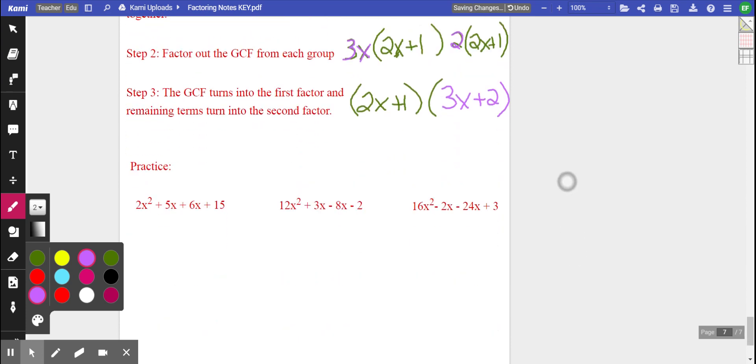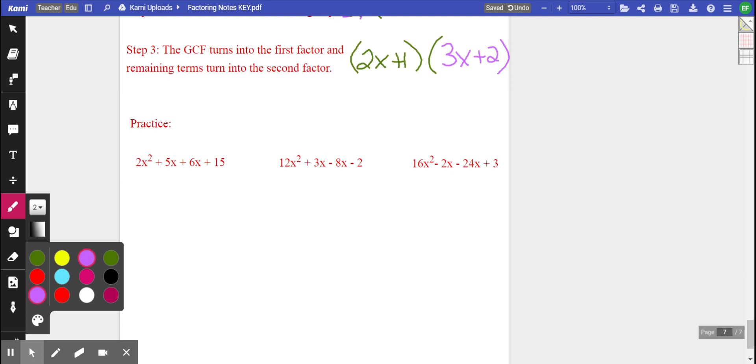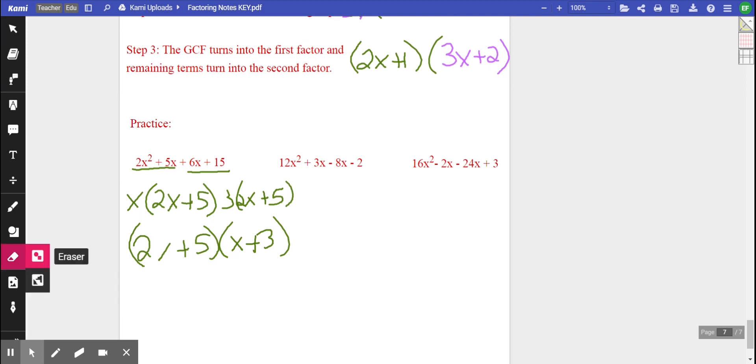All right, let's do it again. You got a couple more practice examples. Again, if you want to go ahead and hit pause at any point and try them yourselves, that's usually a good idea. So grouping my first two, grouping my last two. GCF x, leaving me with 2x plus 5. GCF of the second set is 3, leaving me with again 2x plus 5. So final answer 2x plus 5 and x plus 3. No, the order doesn't make a difference. You can put the x plus 3 first. That's totally fine. You'll still get the same answer.